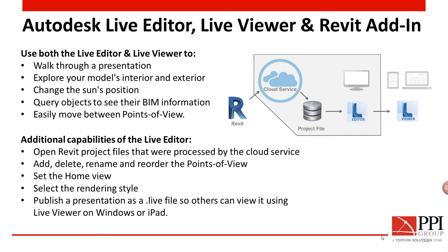The editor and viewer look very similar, with some extra buttons in the editor that the viewer doesn't have. They both have the ability to walk through a presentation just like a game, explore the interior and exterior of your building, change the sun's position, and query objects to see their BIM information. You click on a wall, window, or component and you see the property palette from Revit show up. It's more than just looking around — it's about actually getting at the components. You can also jump around from view to view.